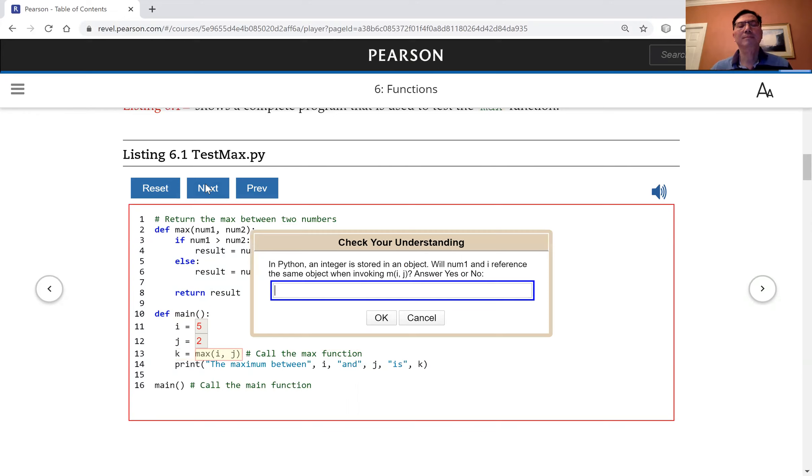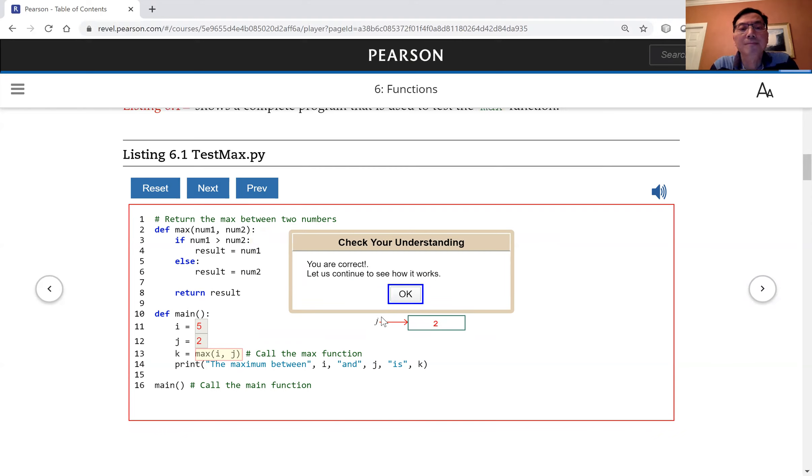Check your understanding. In Python, an integer is stored in an object. Will num1 and i reference the same object when invoking max(i, j)? Answer yes or no. The answer is yes. You are correct. Let us continue to see how it works.